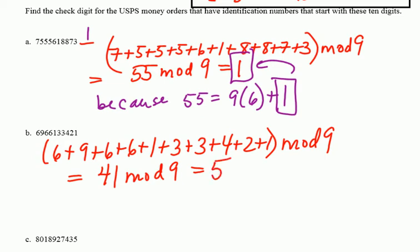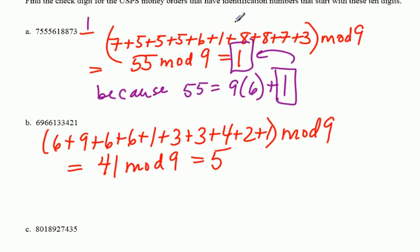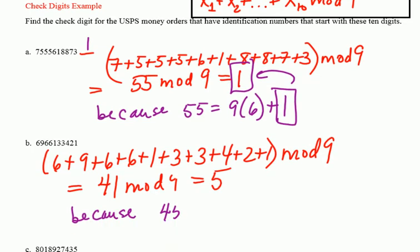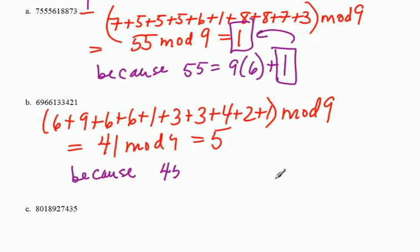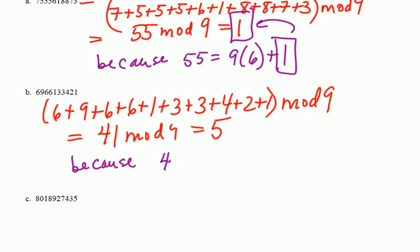Now, if you don't like doing that in your head, although most of you will, you can always rely on my favorite, the division algorithm. And this is because 41 equals 9 times 4 plus 5. Okay, that's how we found that really.